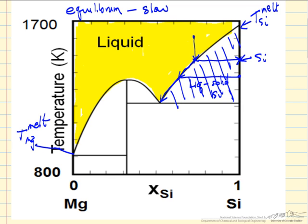The same behavior would happen if we started over here, except when we get to this point, the phase that is in equilibrium is Mg2Si, which is a compound, two magnesium for every silicon. Again we have a two phase region.